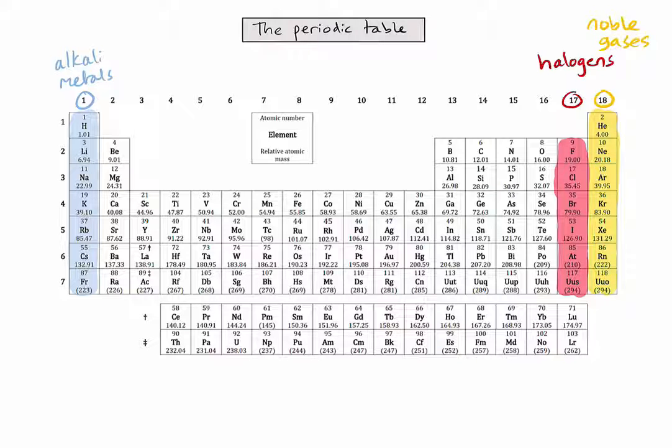The transition metals are pretty much the whole of the D block in the middle of the periodic table. You'll notice that group 12 hasn't been highlighted here, for reasons you'll probably see later in the course. And finally, we have the lanthanoids and actanoids down in the F block.